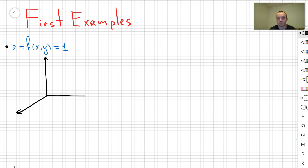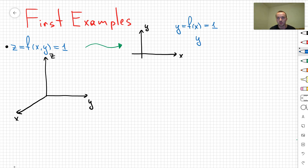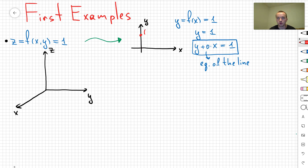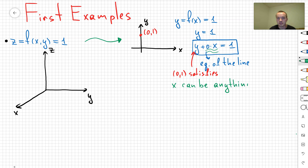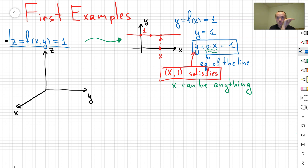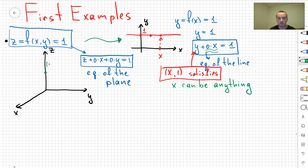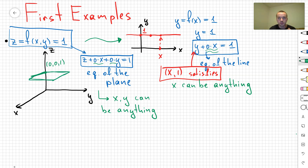Let's do our first example: z = f(x, y) = 1. In the xy-plane this is just y = 1 — a line parallel to the x-axis. Extending to 3D, the equation becomes z + 0·x + 0·y = 1, which is the equation of a plane. Since x and y can be anything, tracing in both directions gives the plane z = 1.